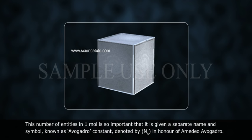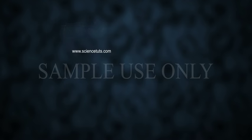In honor of Amedeo Avogadro. Therefore, say that one mole of hydrogen atoms equals to 6.022 into 10 to the power of 23 atoms.